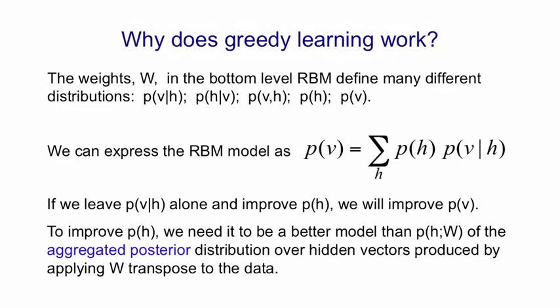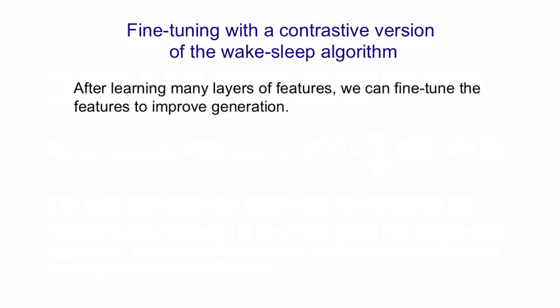So that's an explanation of what's happening when we stack up RBMs. Once we've learned a stack of Boltzmann machines and combined them together to make a deep belief net, we can then fine-tune the whole composite model using a variation of the wake-sleep algorithm. We first learn many layers of features by stacking up RBMs, and then we want to fine-tune both the bottom-up recognition weights and the top-down generative weights to get a better generative model.